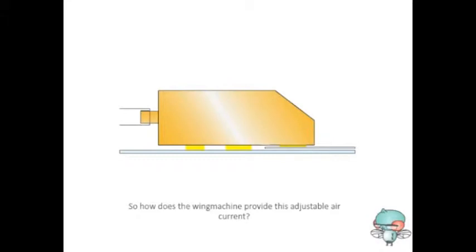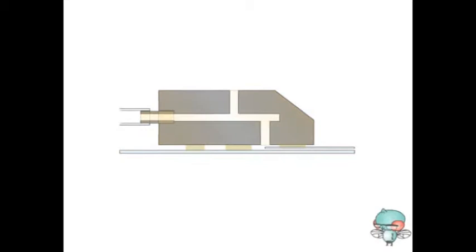So, how does the Wing Machine provide this adjustable air current? This is a cross-section of the Wing Machine. The vacuum controller contains a simple system of channels through which air can move in and out. Air is sucked towards the back of the controller via the connected pump.